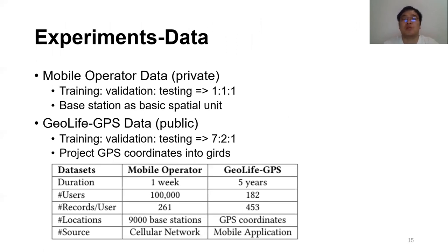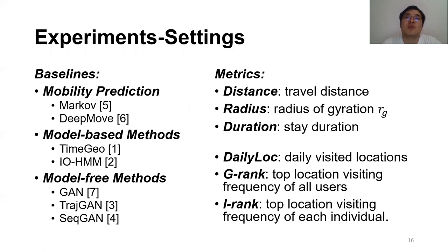We evaluate the performance of our framework using one private mobile operator dataset with more than 100,000 users and one public GeoLife dataset to support various experiments. For each dataset, we divide the whole dataset into three partitions for evaluation. We compare our framework with three classes of baselines: mobility prediction measures including Markov model and DeepMove; model-based measures including Time-Geo and LHMM; and GAN-based model-free measures including standard GAN, image-based Trajectory GAN, and SeqGAN — the well-known model for text generation.